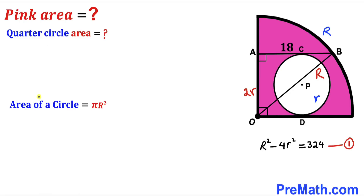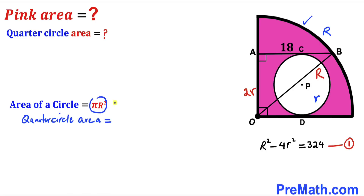Let's calculate the area of the quarter circle. Recalling the area formula: area = πR², where uppercase R is the radius. Since we have a quarter circle, the area is πR² / 4.